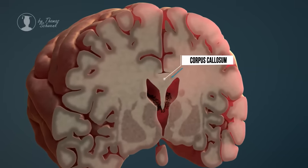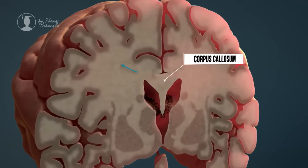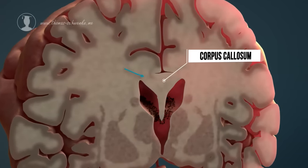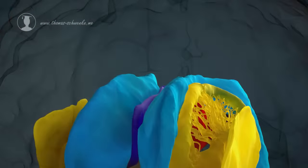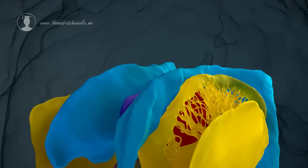The thumb-sized corpus callosum is used for the exchange of information and coordination between the two hemispheres of the brain, so the left hand literally knows what the right hand is doing.